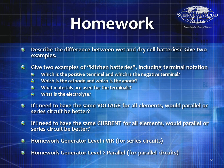For homework: describe the difference between wet and dry cell batteries with examples. Give two examples of kitchen batteries including terminal notation — which is positive, which is negative, which is the cathode, and which is the anode. What materials are used for the terminals? What are the electrolytes? If you need the same voltage across all elements, would a parallel or series circuit be better? If you need the same current for all elements, would parallel or series be better? Complete both the Level 1 VIR sheet and the Level 2 parallel sheet — a slight step up in difficulty.